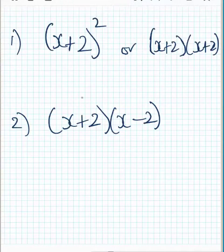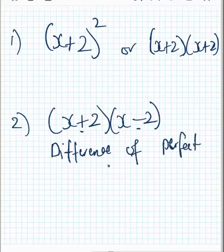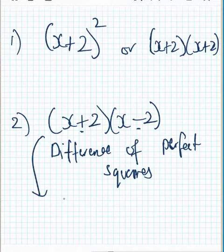The bottom one down here, everything almost looks the same, except you have a positive and a negative. When you have that, this is called the difference of perfect squares. You can see how they're almost the same, but one's a positive and one's a negative, and it's important you can identify this, because if I was to expand number two, the answer will always be in this form: a squared minus b squared. Let's expand this the long way to see how we get that.